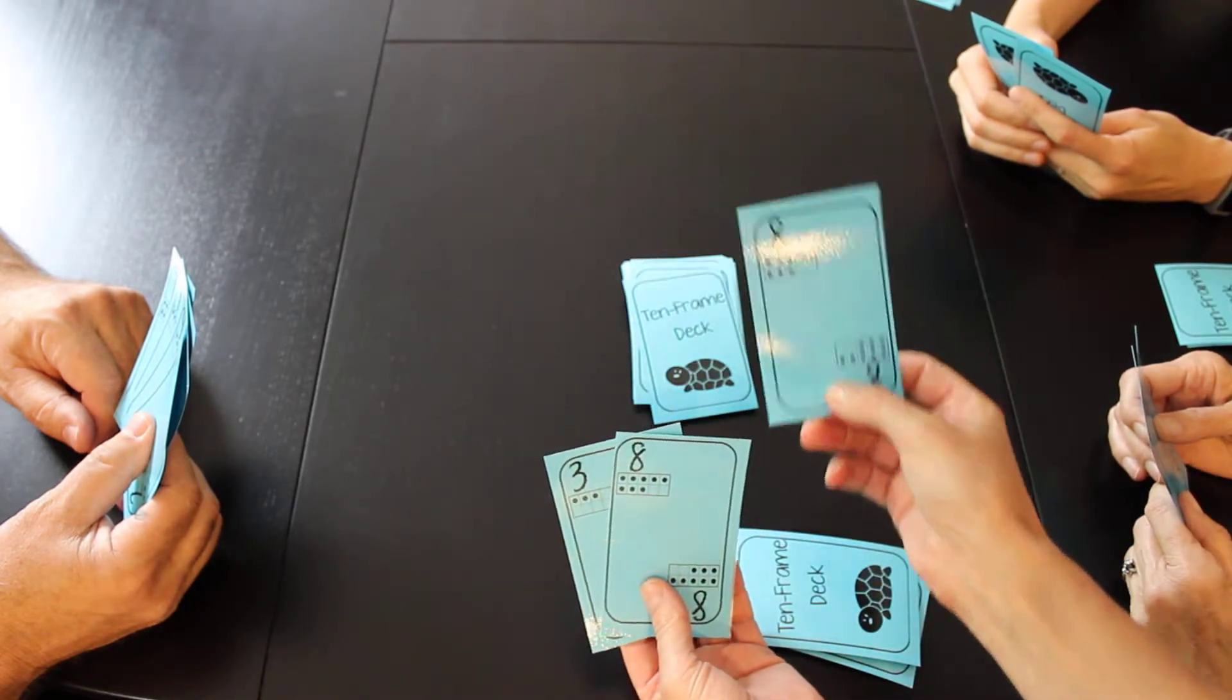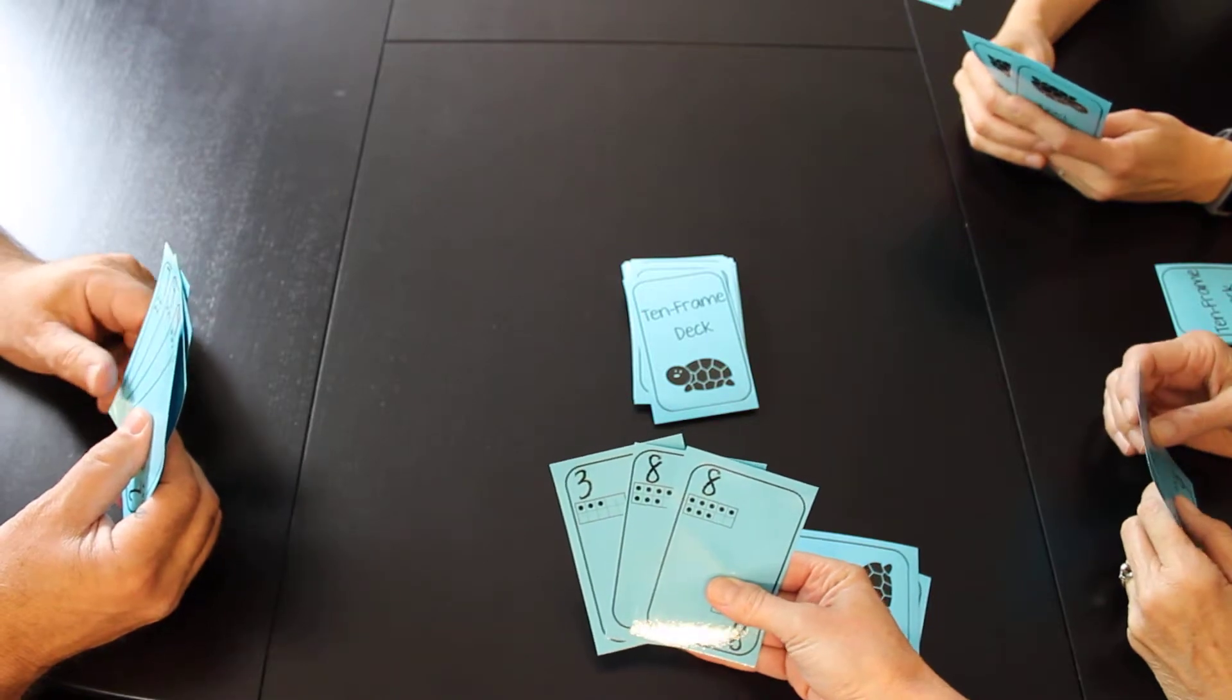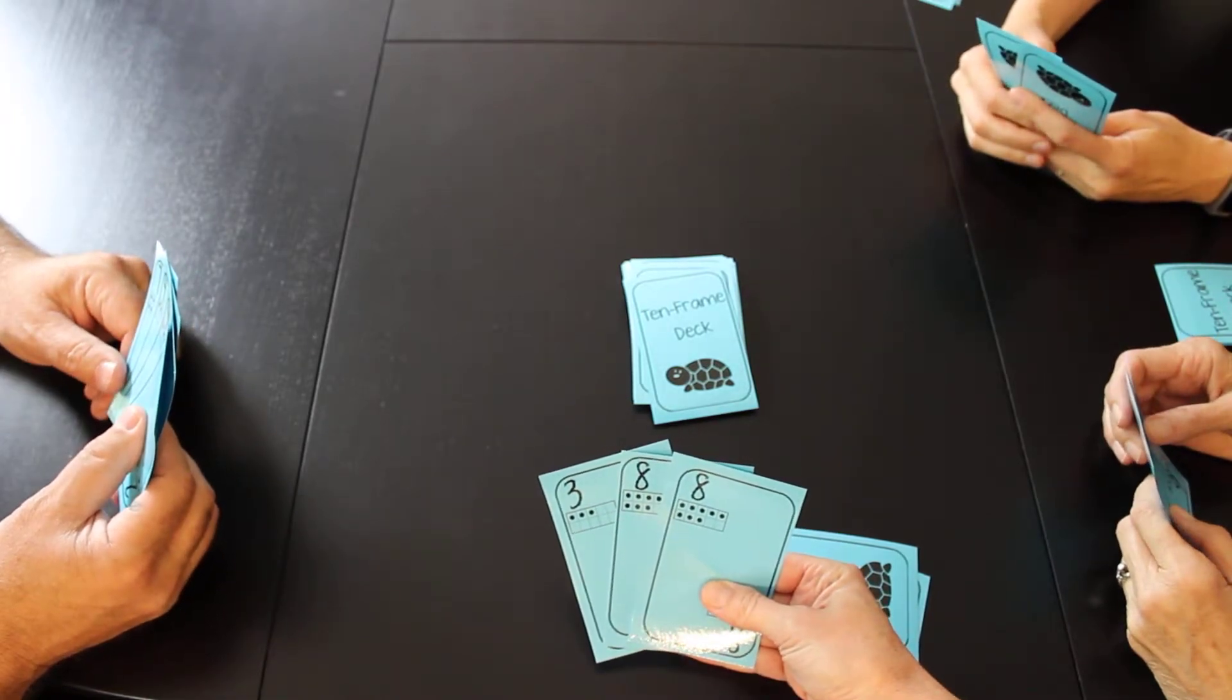So if she didn't have a two she says go fish. All right, I didn't get what I asked for. Okay, go ahead Cheryl.